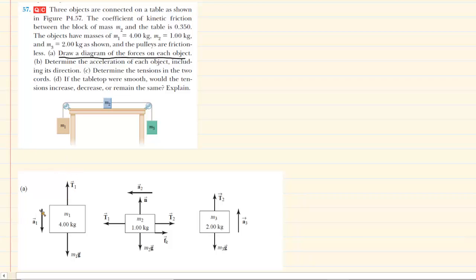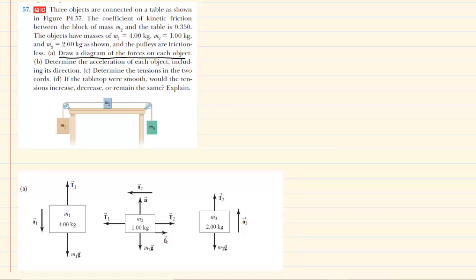Notice that we've indicated the direction of the acceleration of that mass. We know that M1 has a larger value than M3, so intuitively we would expect that mass, being heavier, to overcome M3 and pull downward. Hence M3 is going to be accelerating upward as well.